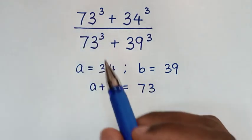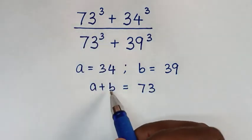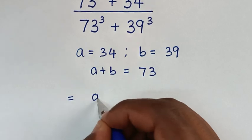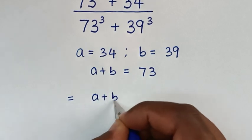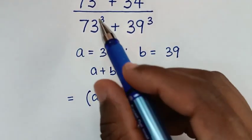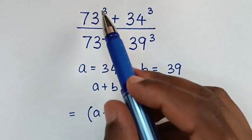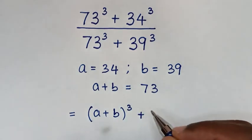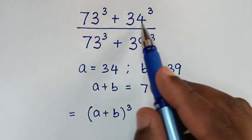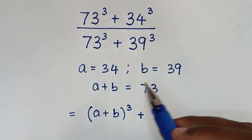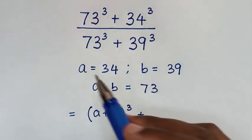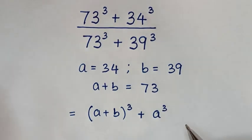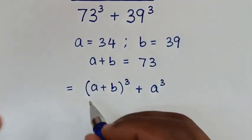So, 73 is A plus B. It will be equal to A plus B, then bracket this power of 3, then plus 34, it is this A. So, it will be A power 3. Then, over —